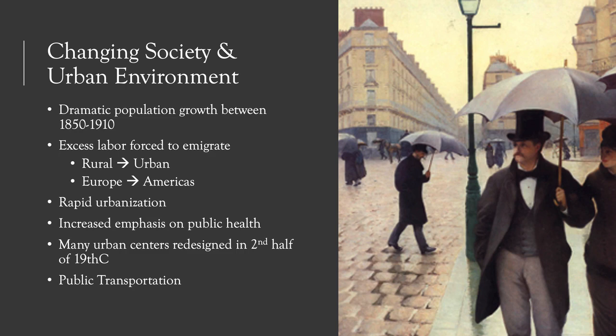Moving on to changing society and the urban environment. There is going to be dramatic population growth in Europe in the second half of the 19th century. The population of Europe increased by 50% between 1870 and 1914 alone. By 1900, nine European cities had populations over one million people. This is largely due to the decline in death rates made possible by medical discoveries such as the smallpox vaccine and other immunological science, and also improved environmental conditions and new efforts in urban sanitation.